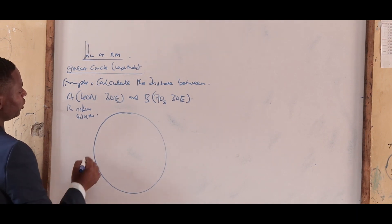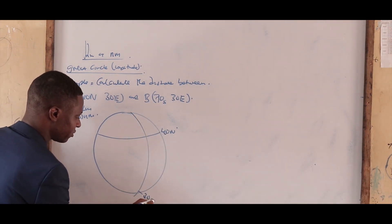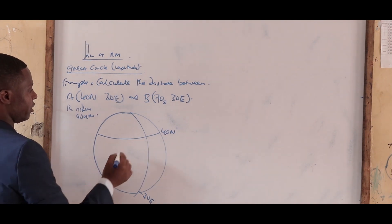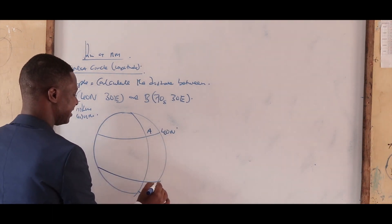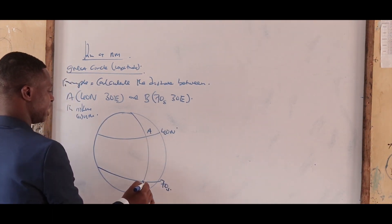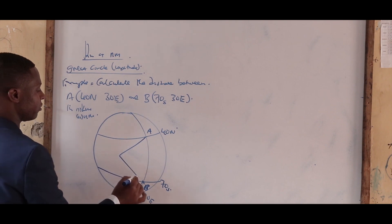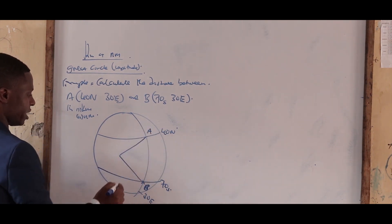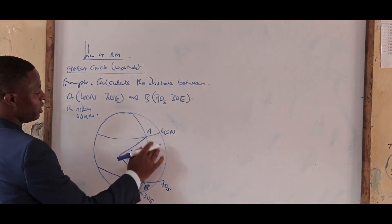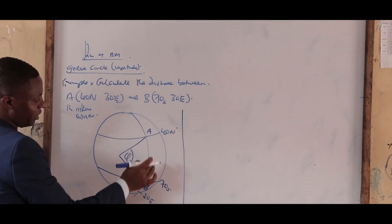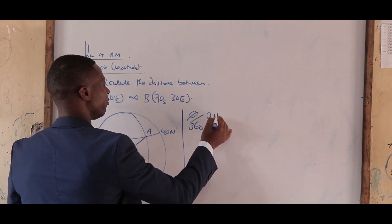To solve this, first plot the points. You have A at 40 north on the meridian, and B at 70 south on the same meridian. This forms something like a sector with theta as the angle at the center. To calculate the arc length AB, you use the formula: theta over 360 times 2 pi r.